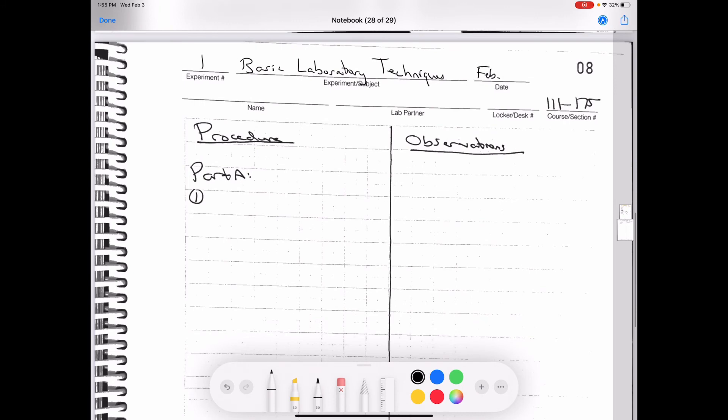Next, you're going to start your procedure. Again, we do it in the two-column format where you have your procedure on the left-hand side and your observations on the right-hand side. And there are five parts, part A, B, C, D, and E.